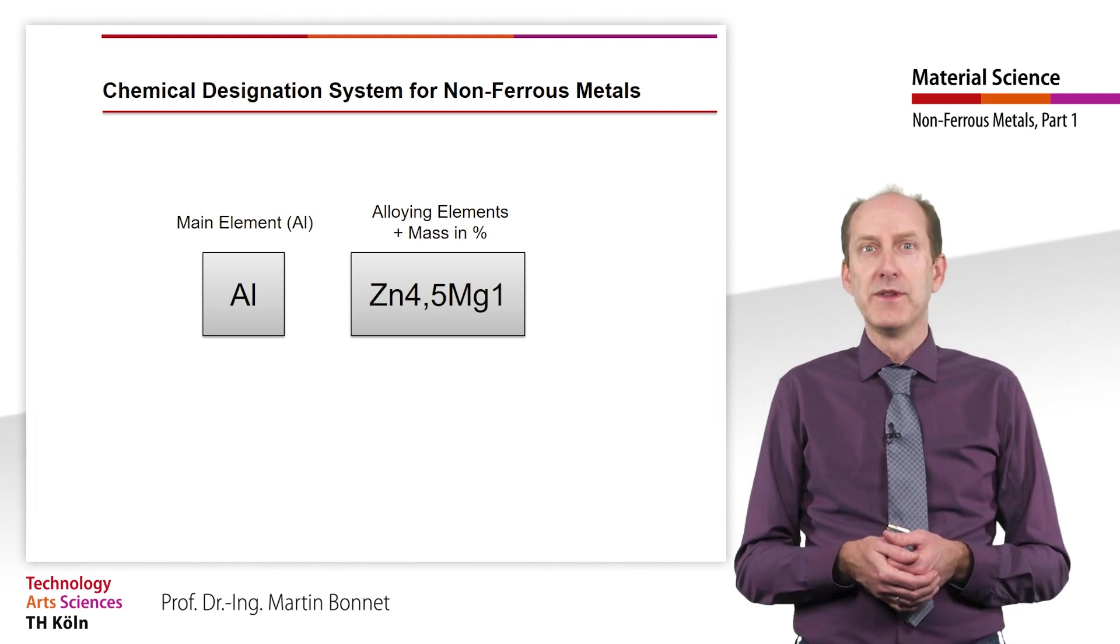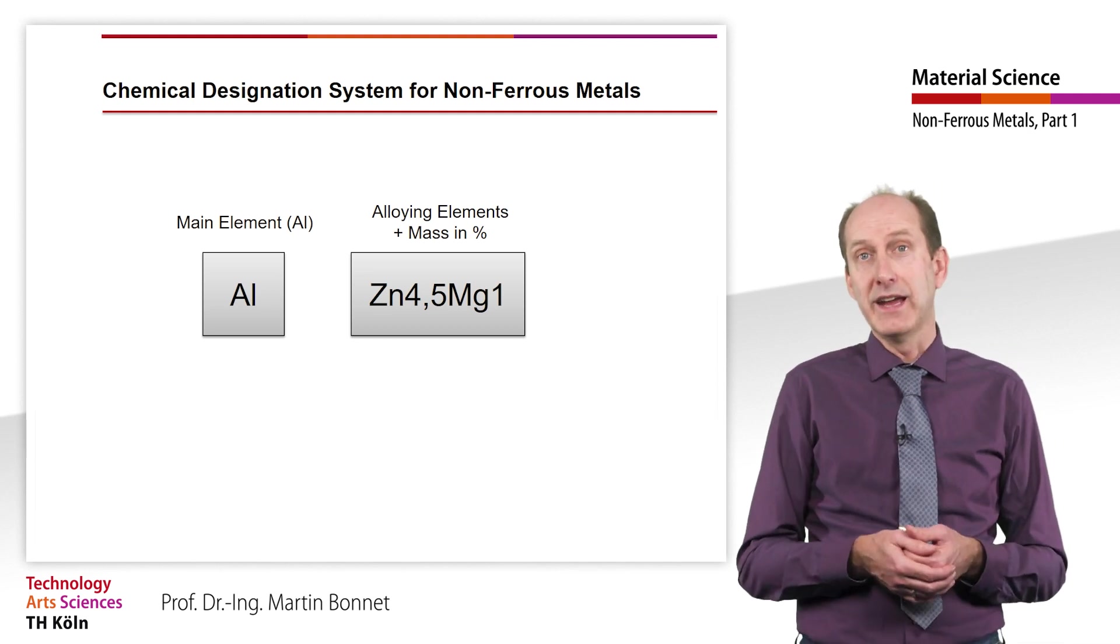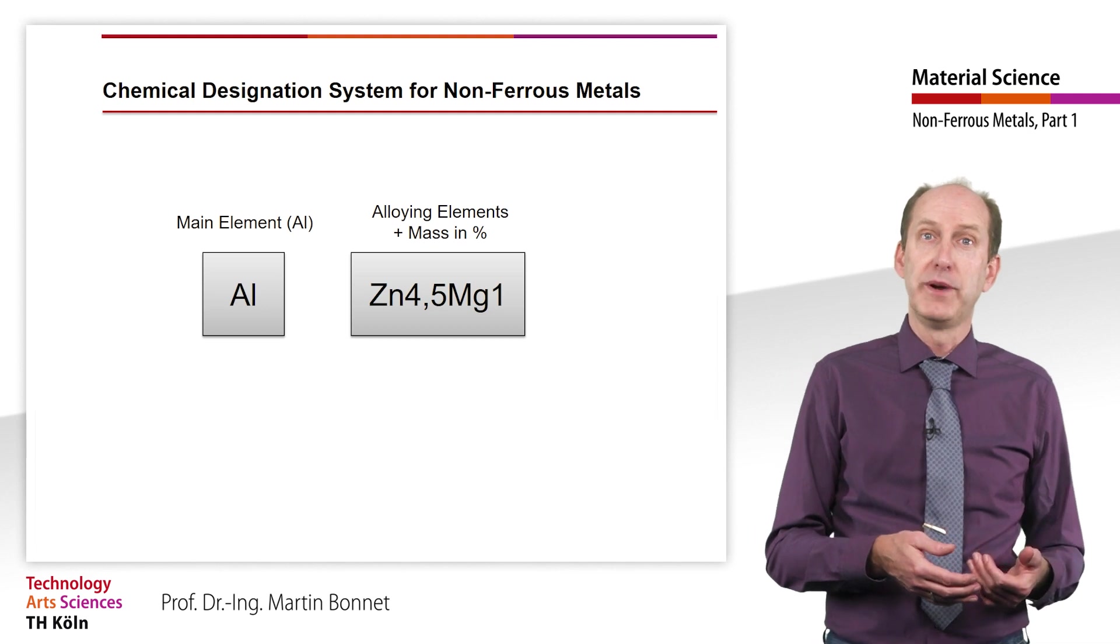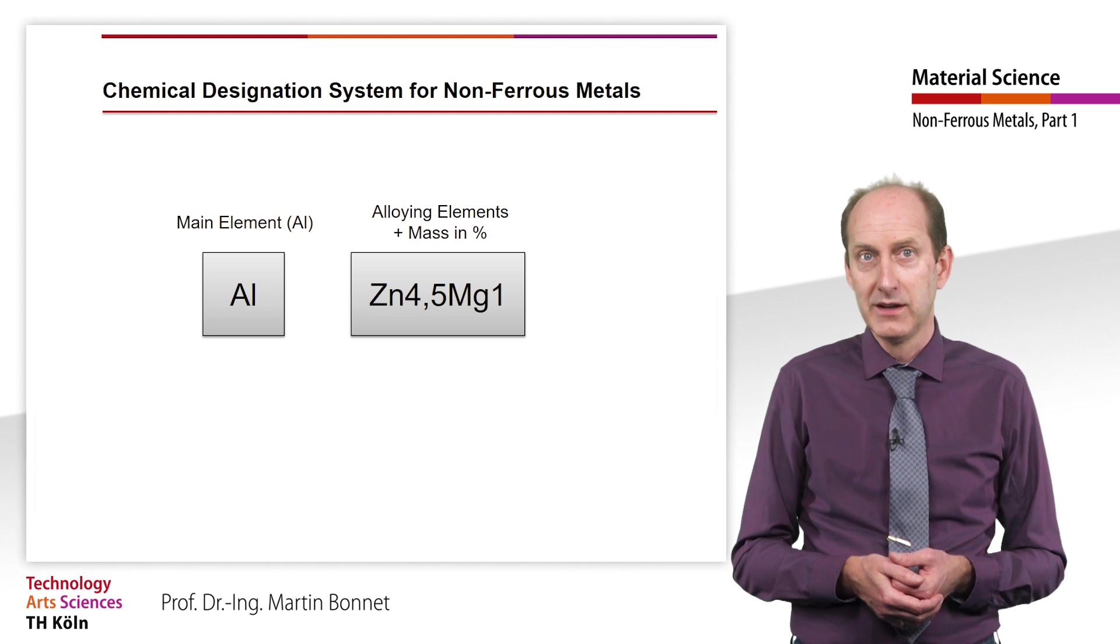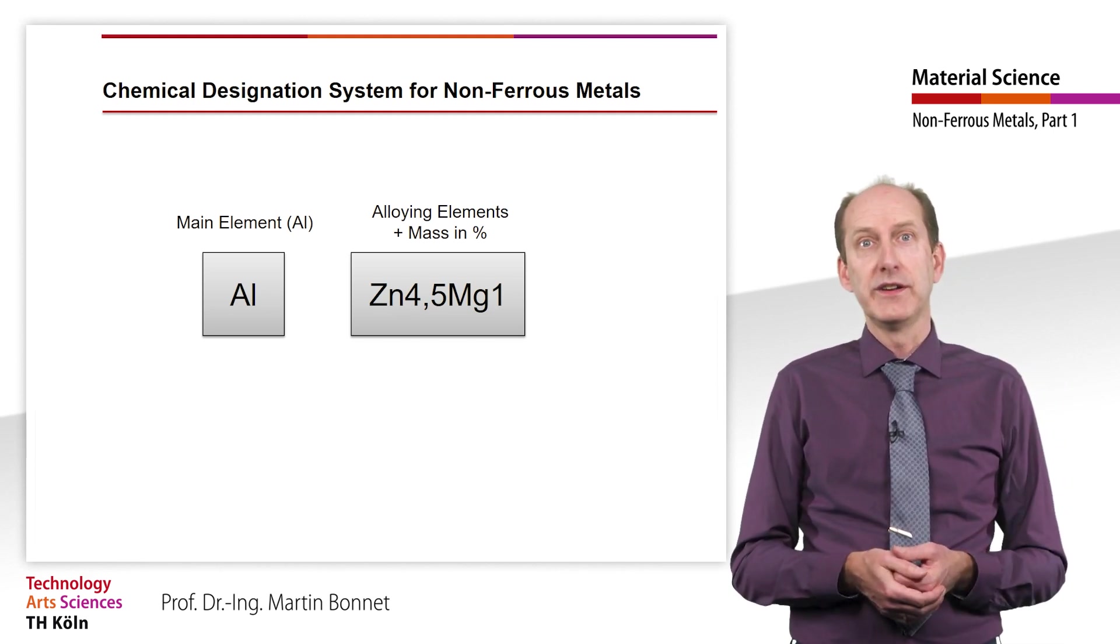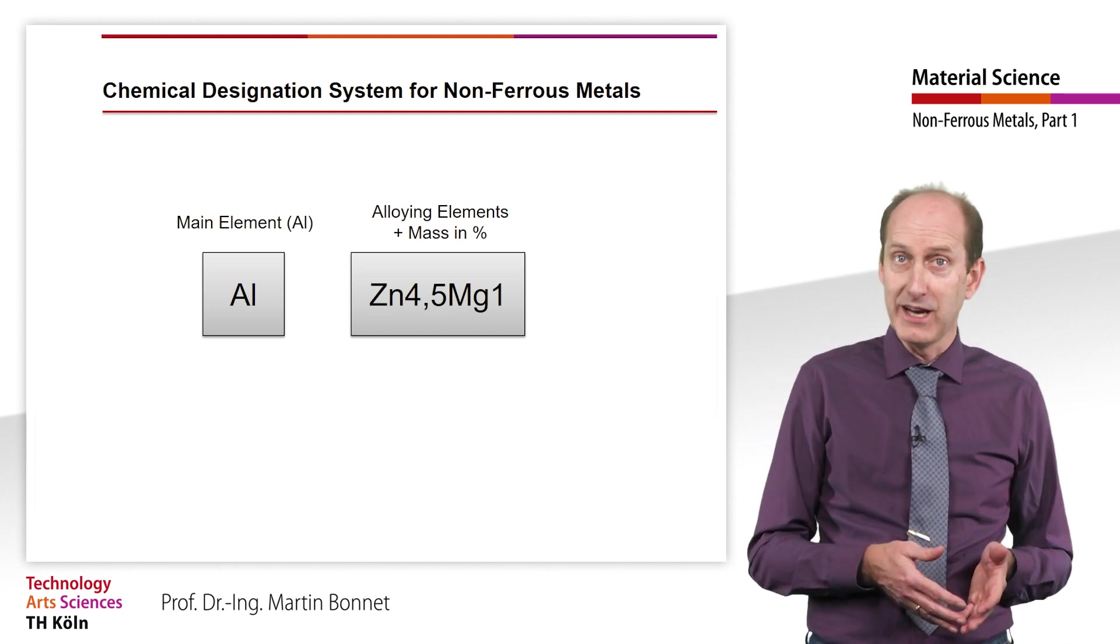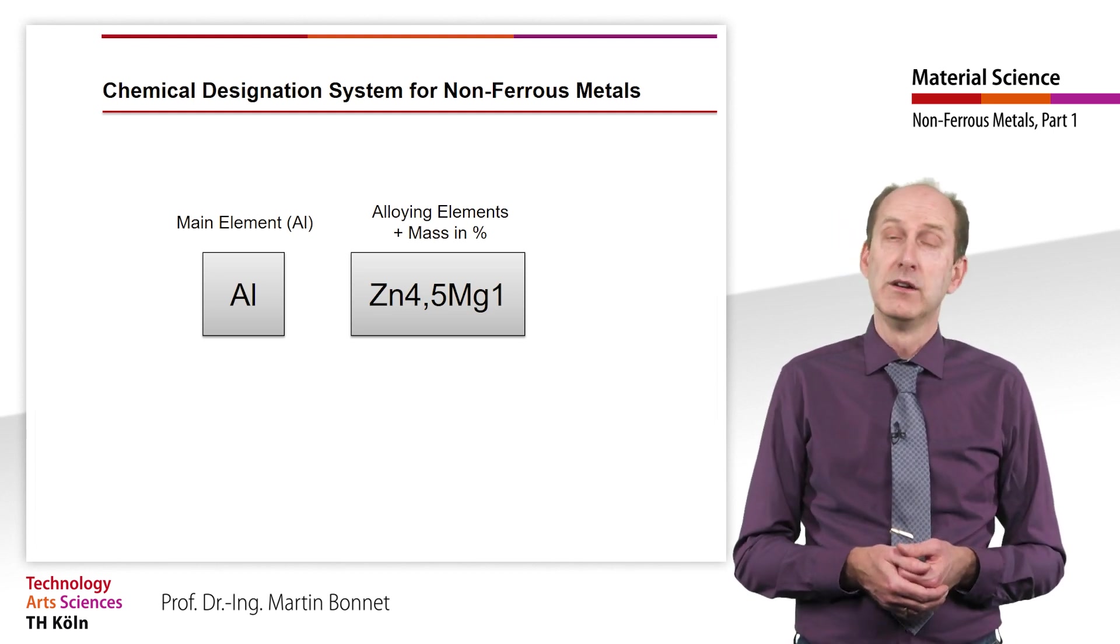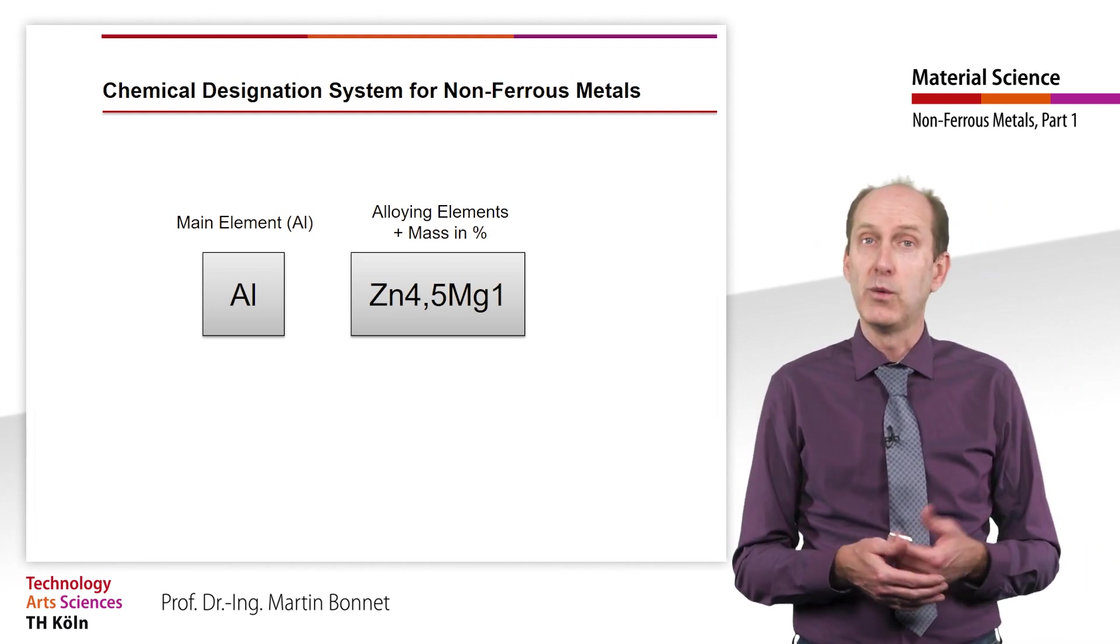The main element, in this case Al for aluminum, is placed in front. This is followed by the alloying elements, each with a subsequent mass content. Special factors as we have become familiar with in the designation of steel do not apply here. Thus, the designation AlZn4.5Mg1 stands for aluminum alloy with 4.5% zinc and 1% magnesium.